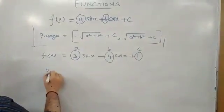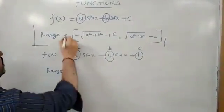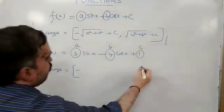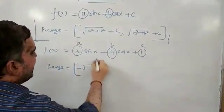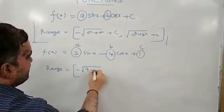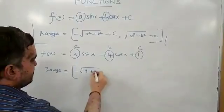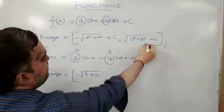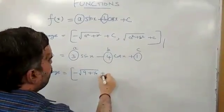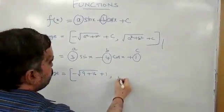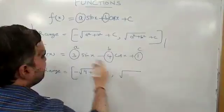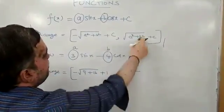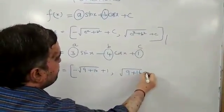Using the formula already given to you. Range equals minus square root of a square plus b square plus c, comma, square root of a square plus b square plus c. That means 3 square is 9, 4 square is 16. C value is equal to 1.